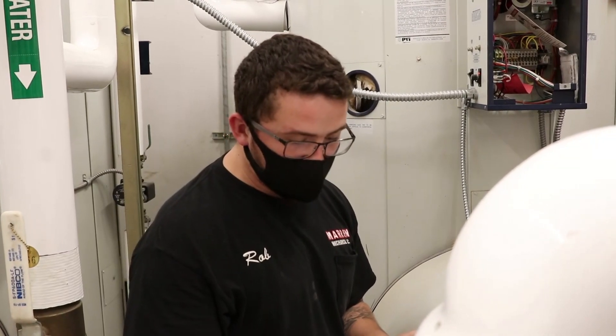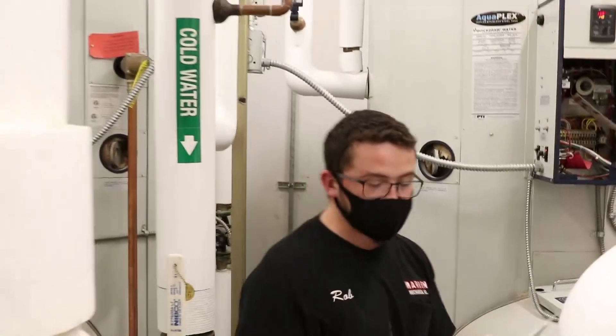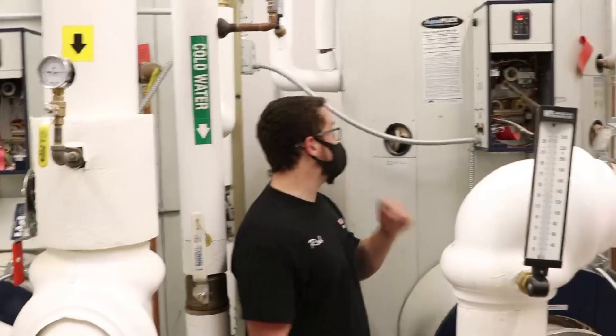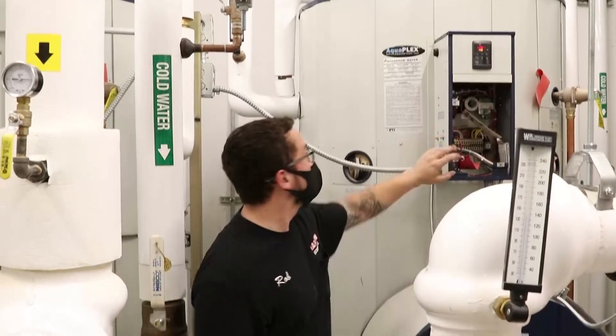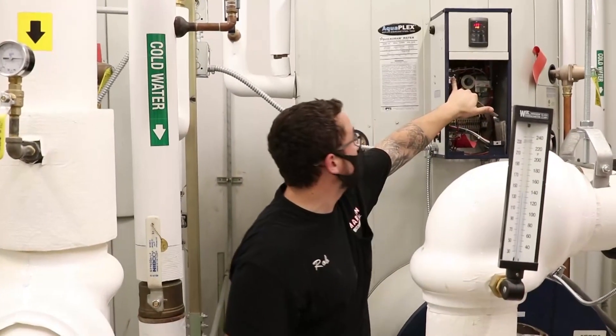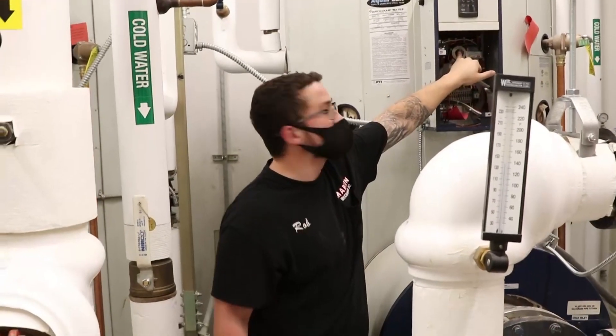So let's talk about maintenance now. Annually, you're going to want to check the safeties like we just discussed. Annually, you're going to want to test the low water cutoff. You're going to want to test the manual reset high limit. You're going to test the upper operating control.